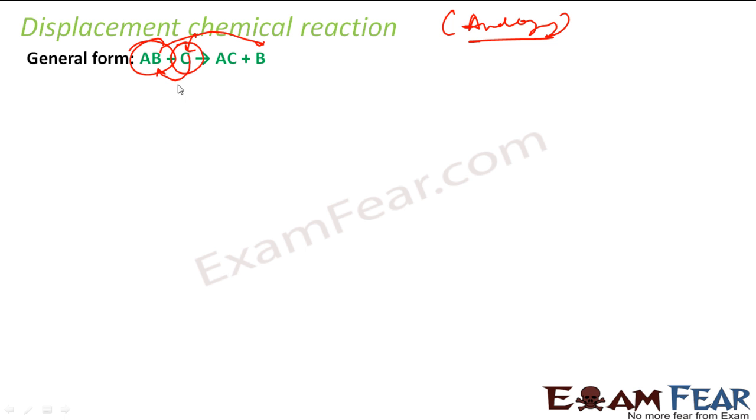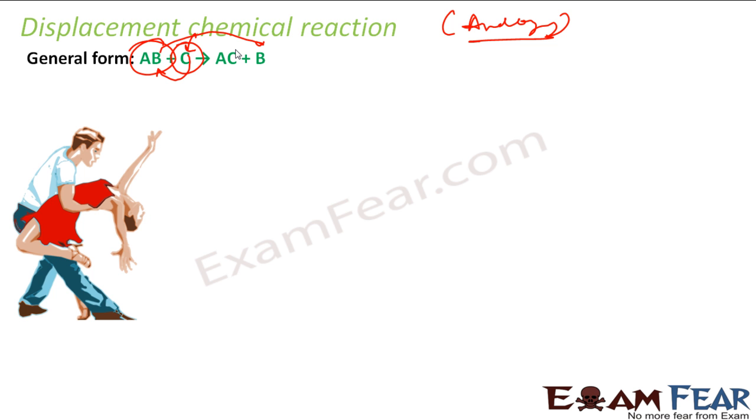That is how it is. There is a compound AB, they are happy together. One guy comes C and C displaces this guy because A is attracting more towards C or something happens, you apply some heat or something, this becomes AC plus B.